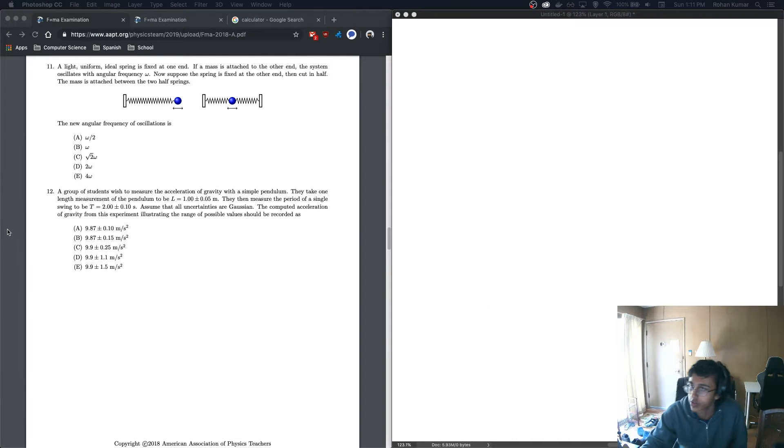On to number 12. A group of students wish to measure the acceleration of gravity with a simple pendulum. They take one length measurement of the pendulum to be L equals 1 plus or minus 0.05 meters. Then they measure the period of a single swing to be t equals 2 plus or minus 0.1 seconds. Assuming that all uncertainties are Gaussian, the computed acceleration of gravity from this experiment illustrating the range of possible values should be recorded as... Oh, I hate Gaussian equations, but whenever we have them, let's just write our equations that we need to know.